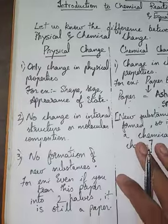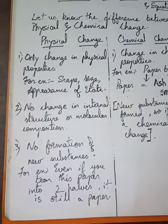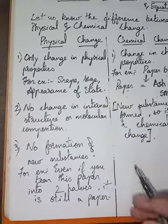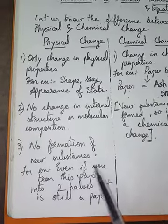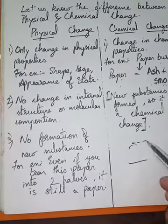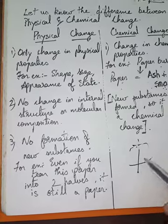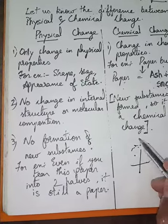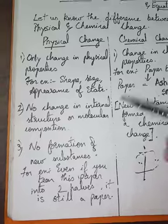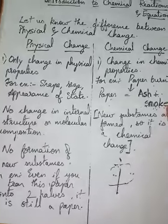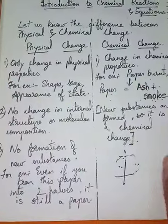But in physical change, no new substances are formed. For example, if you tear a piece of paper in half, it is still paper — even though it became two halves, it remains paper. So that is the basic difference between physical and chemical change.